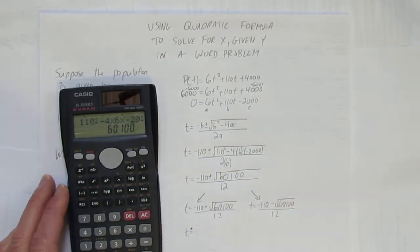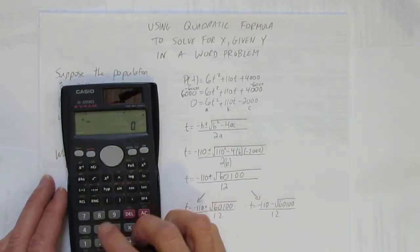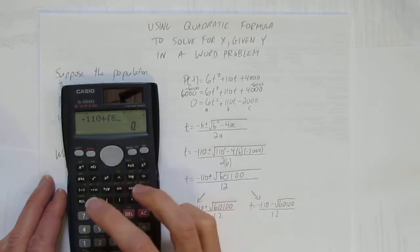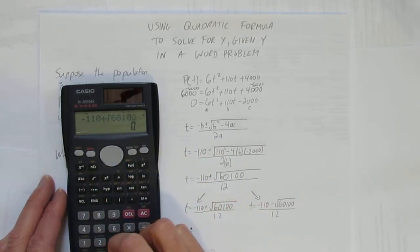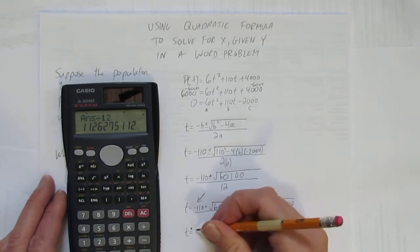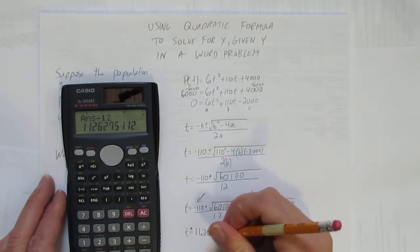Now I'm gonna solve. I'm gonna put a rounding dot because I know I'll have to round. What's negative 110 plus the square root of 60,100, divided by 12? I get approximately 11.26.